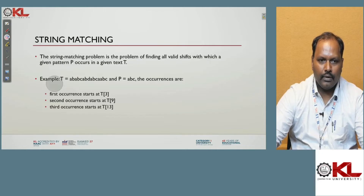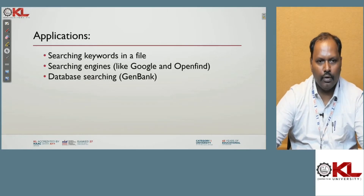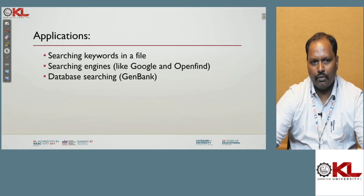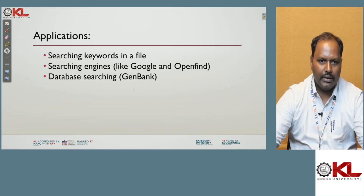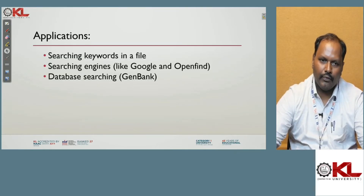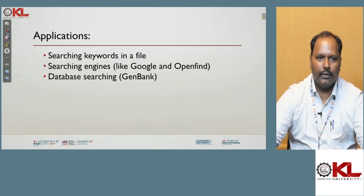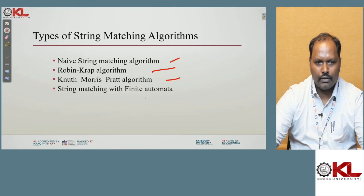This is the basic example of string matching — whether the pattern matches the text or not. The applications of string matching algorithms include: searching keywords in a file (Word, Excel, or any application), search engines like Google, Opera, and others, and database search — for example, bank data. These are the main applications of string matching. The types of algorithms are: Naive string matching, Robin-Karp algorithm, and string matching with finite automata.